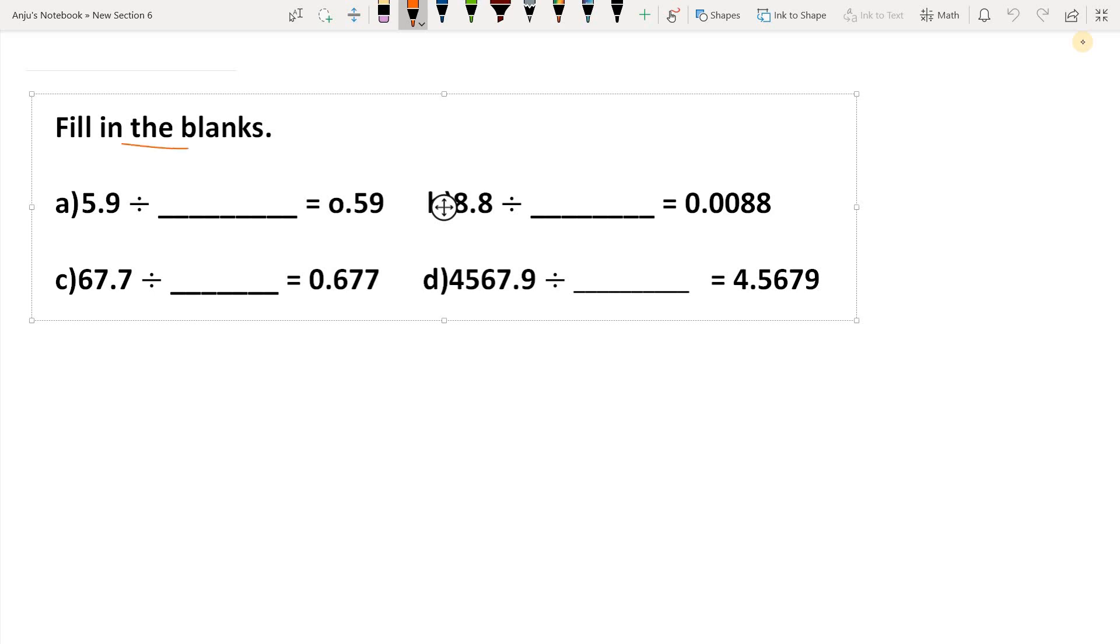Now take some more examples to understand it well. Fill in the blanks. Question 1: 5.9 divided by what gives 0.59? Students, here in the question we have one decimal place, but in the answer we have two decimal places. This means the decimal point moved one place. It means here we have to divide by 10.